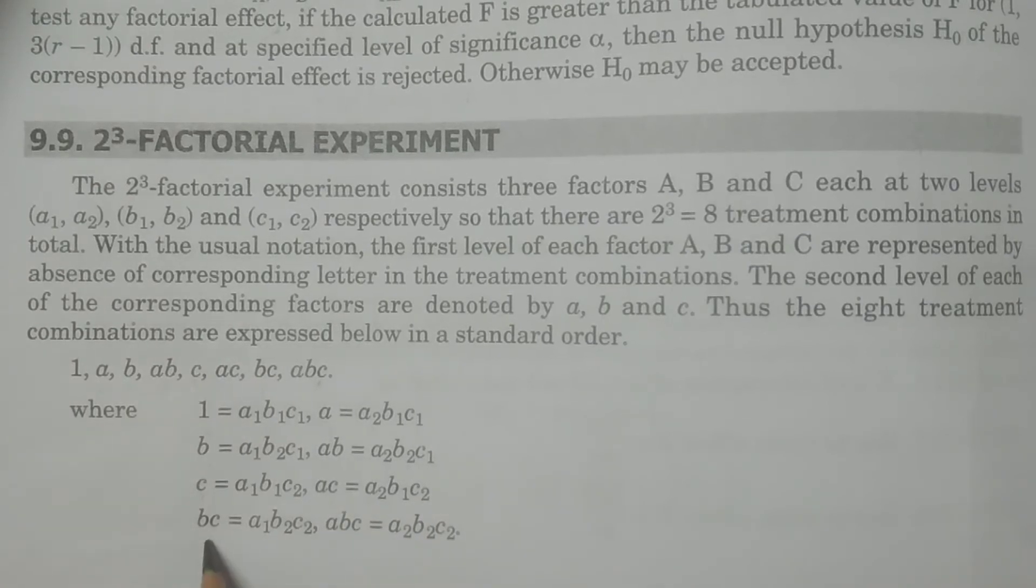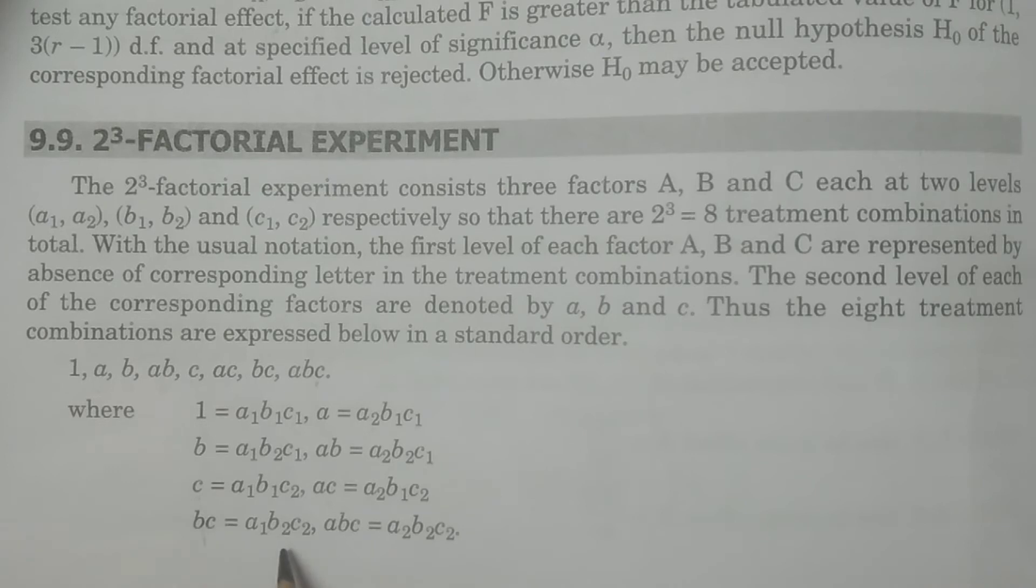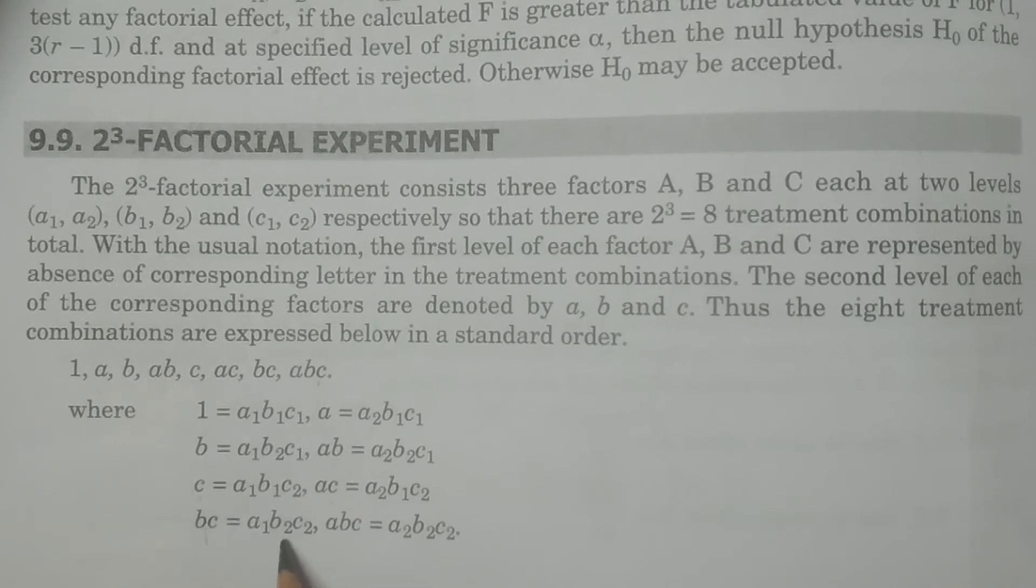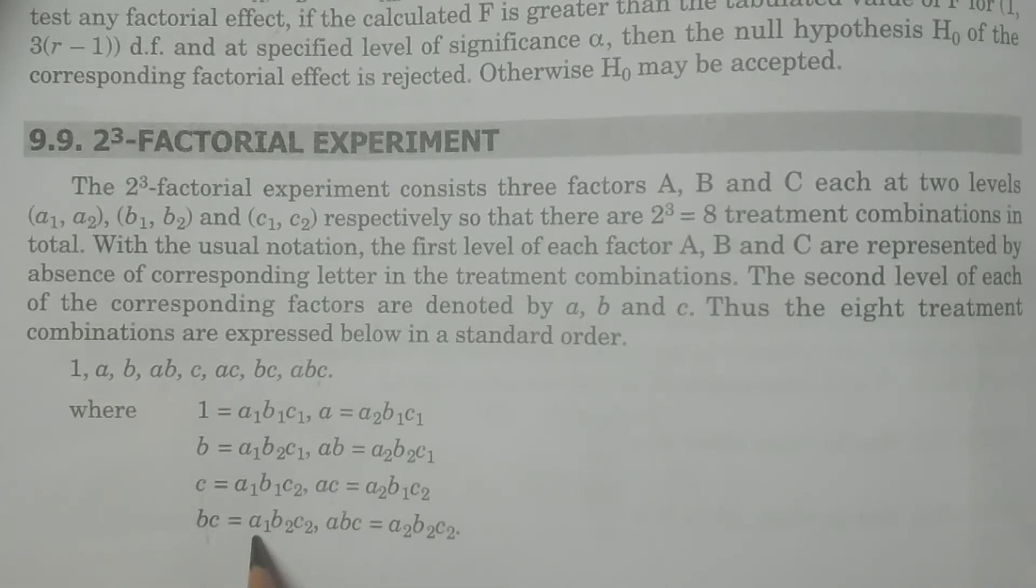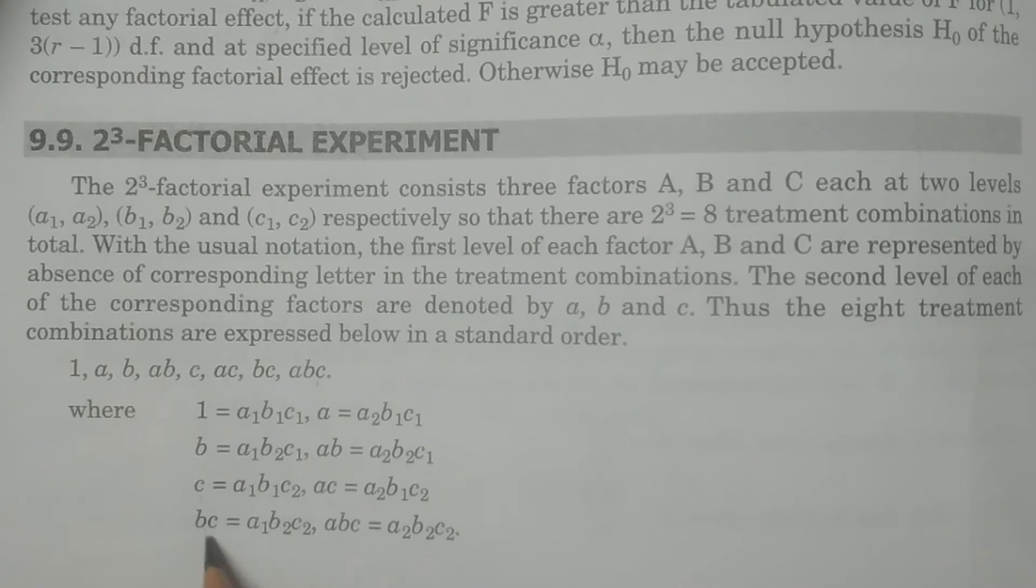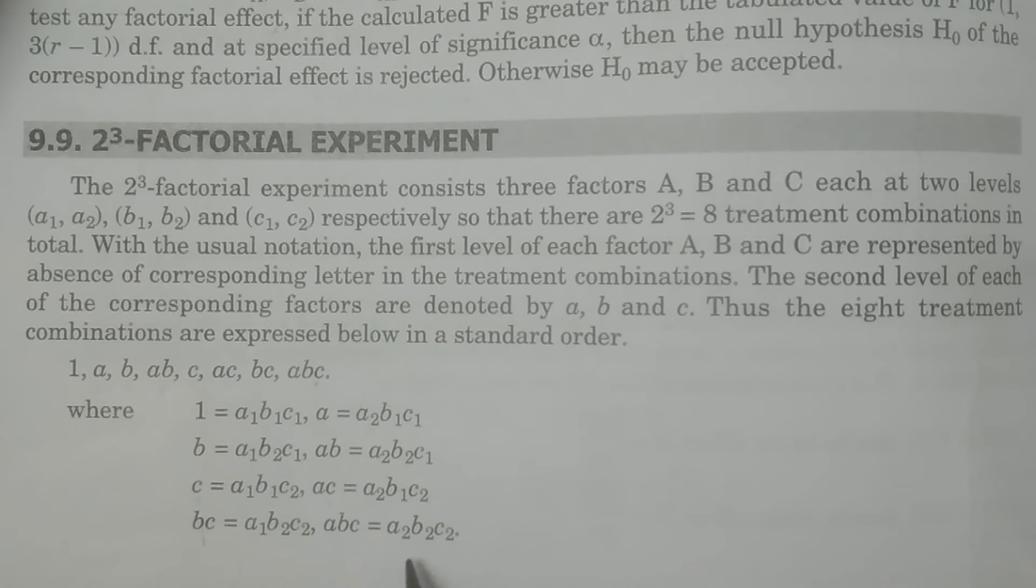BC. BC means B, C are at second level B2, C2. And A is at first level A1, B2, C2. Therefore BC equals. And ABC. That is all are at, all A, B, C are at second level A2, B2, C2.